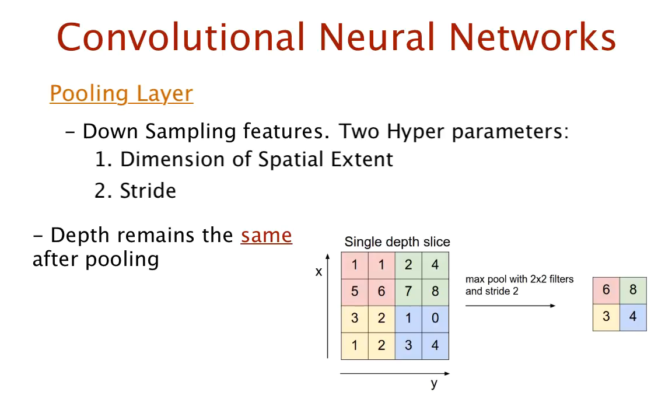Consider the MNIST dataset after the output from the convolution layer that I discussed previously. We have 26x26x32 volume. Now using a max pool layer with 2x2 filters and a stride of 2, this volume is now reduced to a 13x13x32 feature map. Clearly, we reduced the number of features to 25% of the original number. This is a significant decrease in the number of parameters.